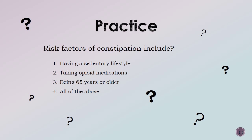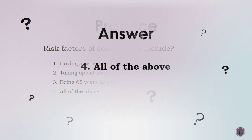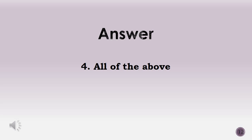Let's practice what we've learned. Risk factors of constipation include: one, having a sedentary lifestyle; two, taking opioid medications; three, being 65 years or older; four, all of the above. The answer is four, all of the above. Risk factors of constipation include being female, being over 65, taking opioid medications, having a sedentary lifestyle, and having a poor diet.